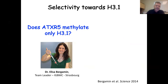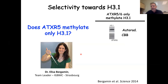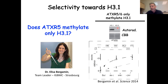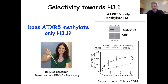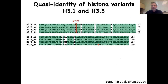All the work presented was done by former postdoc Dr. Elisa Bergamin, now a team leader at IGBMC in Strasbourg. We asked the simple question: does ATXR5 only methylate H3.1? We reconstituted nucleosomes and performed methyltransferase assays — we see nice methylation of nucleosomes reconstituted with histone H3.1, whereas when we reconstituted the nucleosome with H3.3, we could no longer observe methylation. This was supported by Michaelis-Menten kinetics: a very nice KM plot for peptides corresponding to H3.1, whereas we had very low methylation for H3.3. Doing a sequence alignment between H3.1 and H3.3 near the K27 methylation site, there's a single difference — a substitution of an alanine in H3.1 to a threonine in H3.3.